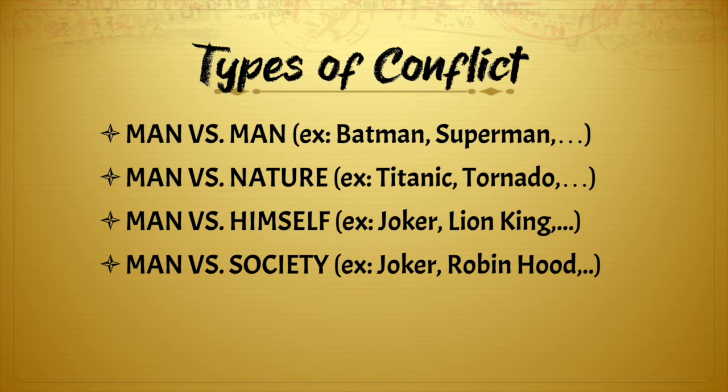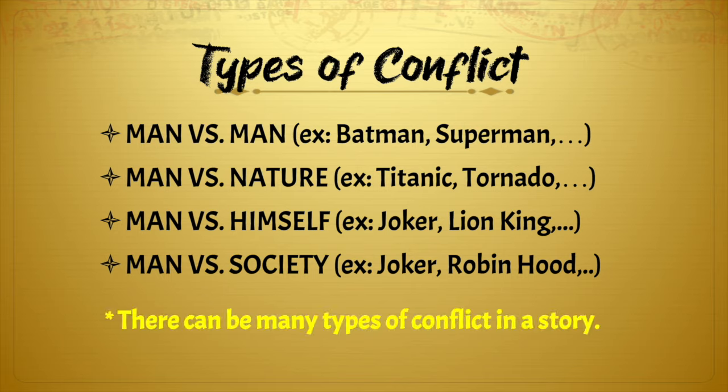Man vs. Society — again, here we have the Joker. As you can see, there can be many types of conflict in one story. Robin Hood is also an example of Man vs. Society. There can be many types of conflict in a story.